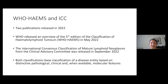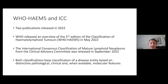The WHO released their overview of the fifth edition of the classification of hematolymphoid tumors in May of 2022, followed by a beta version of this classification online. The ICC — the International Consensus Classification of Mature Lymphoid Neoplasms — was submitted from the Clinical Advisory Committee, an international committee organized after a European Society of Hematology meeting. That classification system was released in September of 2022.